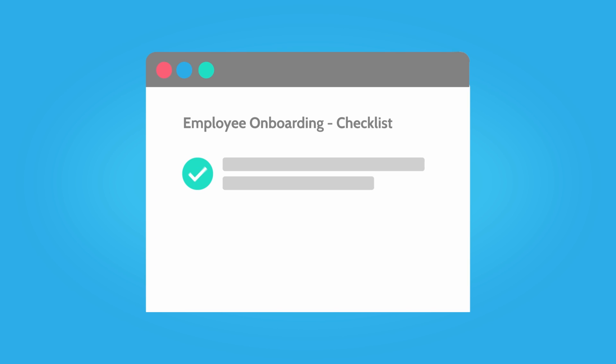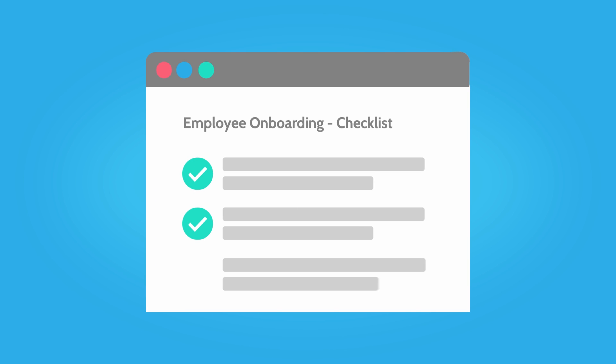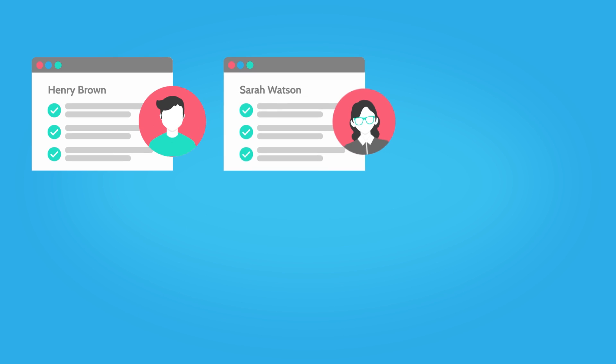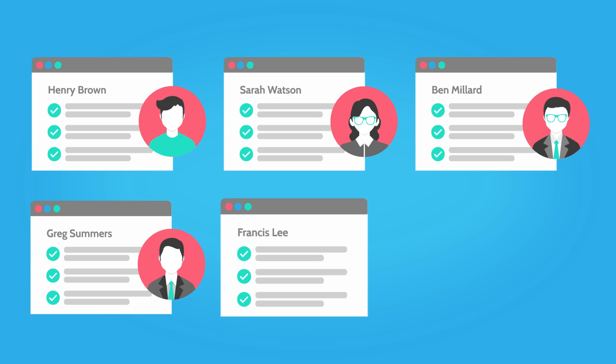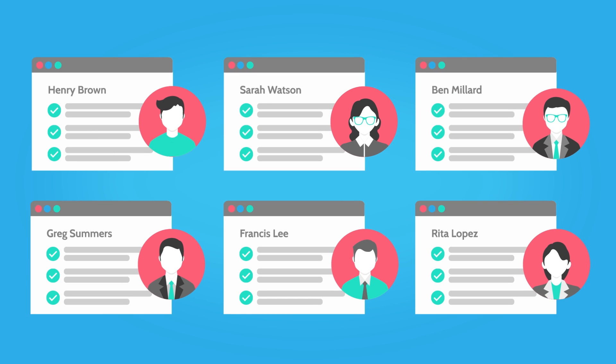Checklists, on the other hand, are single copies of your template which track your progress. For example, you would have a different employee onboarding checklist for each new employee.